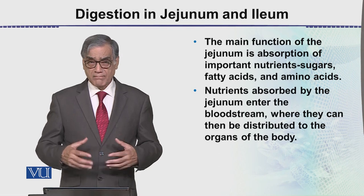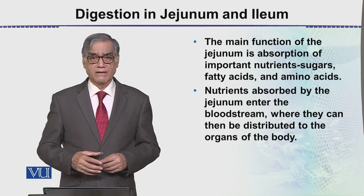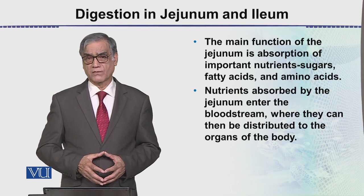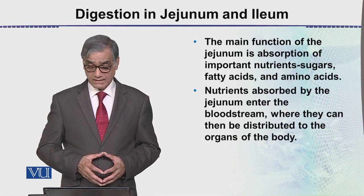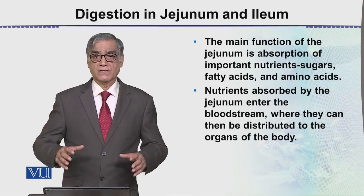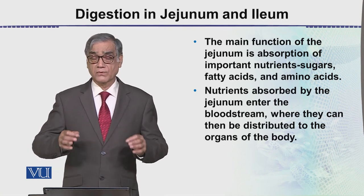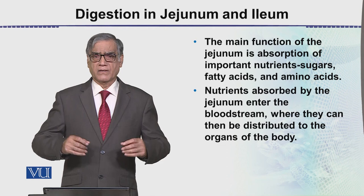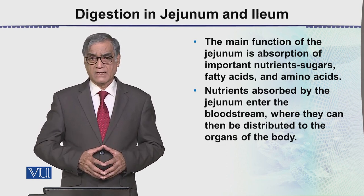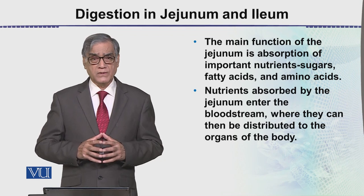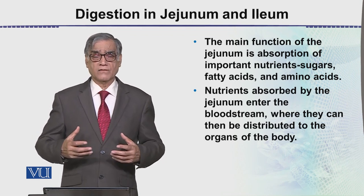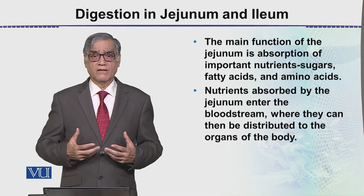There are microvilli through which absorption of these products of digestion occurs. Once these products of digestion are in the blood, they are transported to each and every part of the body — from brain to toe. This is essentially food for the cells.